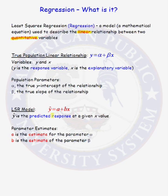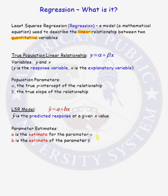Our least-squared regression model is of the form y-hat equals a plus bx. Y-hat is the predicted response at a given x-value. If we have a particular x-value, we put it into this equation and out comes what we would predict our response to be at that given x-value. To do that, we need to know what a and b are. A is our estimate for the parameter alpha in the true linear relationship, and b is the estimate of the parameter beta, the true slope.